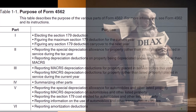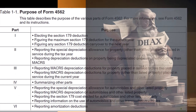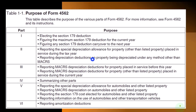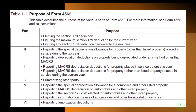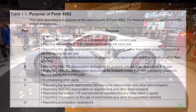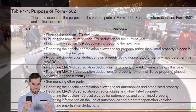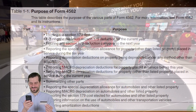Part three: reporting MACRS depreciation deduction for property placed in service before this year. MACRS is the normal thing that usually comes to mind for depreciation methods for the tax code — kind of a double declining balance, usually with a half-year convention. Also reporting MACRS depreciation deduction for property other than listed property placed in service during the tax year. Part four: summarizing other parts. Part five: reporting the special depreciation allowance for automobiles and other listed property. Automobiles have their own special rules. Also reporting MACRS depreciation on automobiles and other listed property.